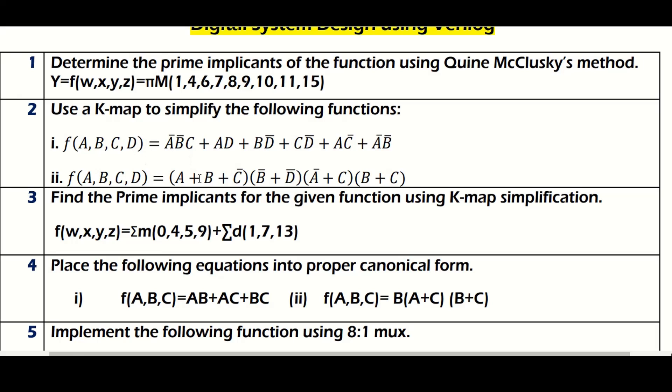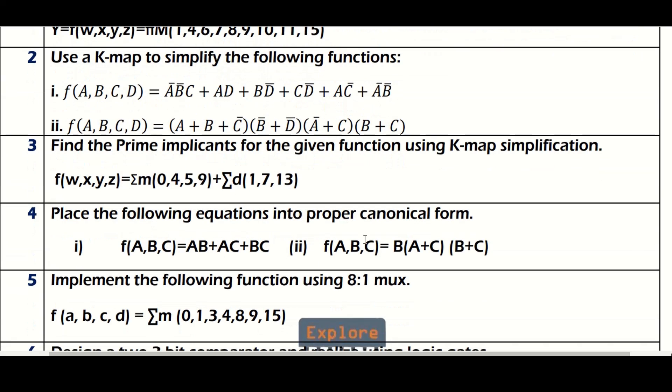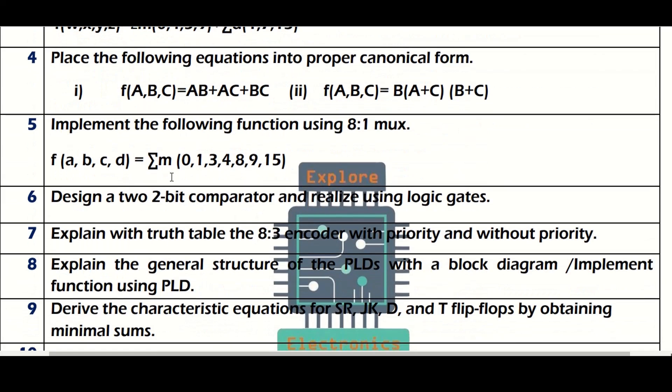And then again, a K-map simplification question you may get like this also. And then this will be on canonical form. You need to write the equations in proper canonical form. You may get this question also. And then coming to the second module...